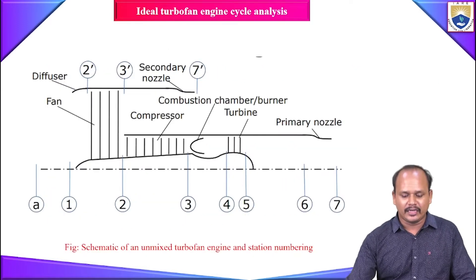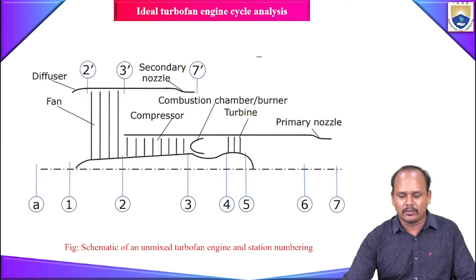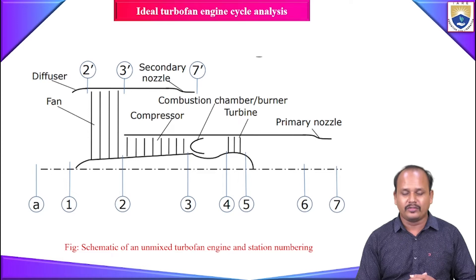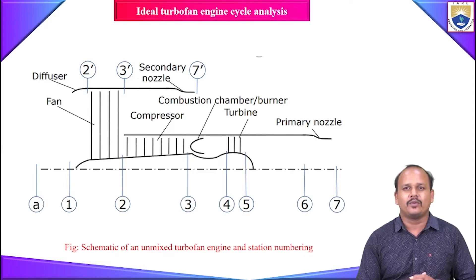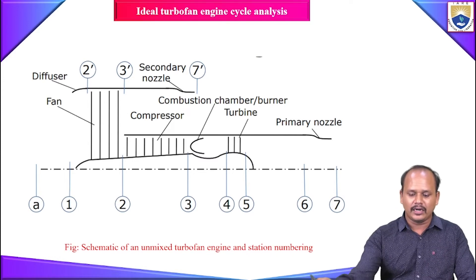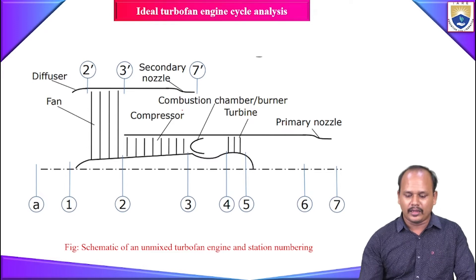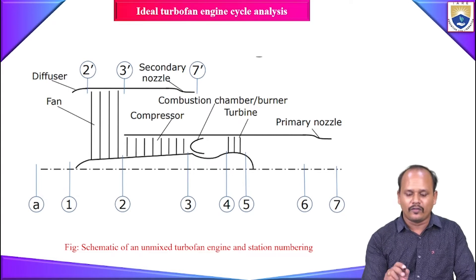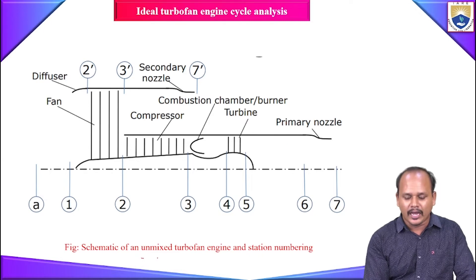Before starting the analysis, let us identify the type of turbofan engine we will use. We are going to take an unmixed twin spool turbofan engine. The term 'unmixed' means the cold flow (secondary/bypass flow) and the primary hot flow are NOT mixed together and expanded through a common nozzle. Instead, each flow is accelerated separately through its own nozzle — this is what we call an unmixed turbofan engine.